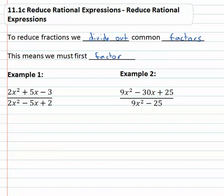We cannot look at an expression like 2x squared plus 5x minus 3 over 2x squared minus 5x plus 2. We are not allowed to, this is bad, we are not allowed to just cancel terms. That's bad, don't do that, that's bad because those are not factors.